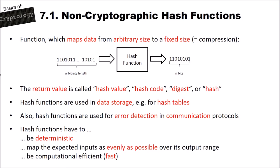Hash functions are used in data storage, for instance for hash tables, which you use to store and efficiently retrieve data. They are also used for error detection in communication protocols to check if a message has errors. Hash functions must be deterministic — the same input always produces the same output. They should map inputs as evenly as possible over the output range, and since we can put in arbitrary length data, they should be computationally efficient and fast.